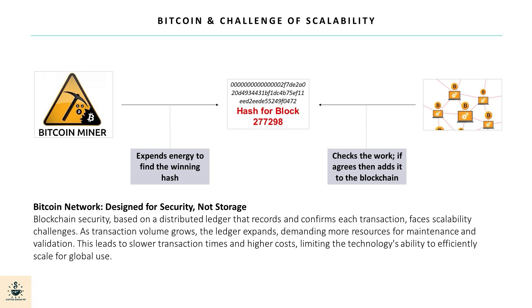Moreover, every transaction needs to be processed by the network. With the current proof-of-work mechanism that underlies networks like Bitcoin, this processing involves complex mathematical computations that are both time and energy intensive. As more transactions are added to the queue, the time to process each one can increase, leading to potential bottlenecks. Solutions such as the Lightning Network exist to alleviate the issue, but they are beyond the scope of this discussion.